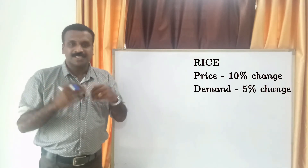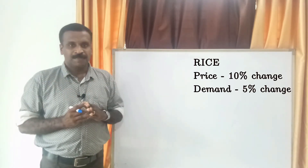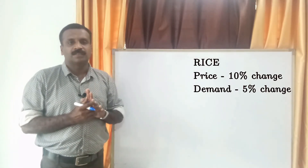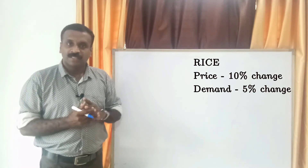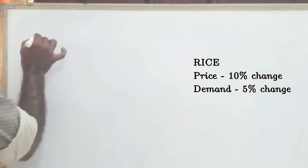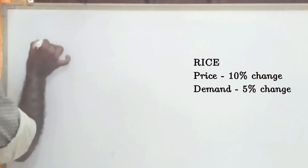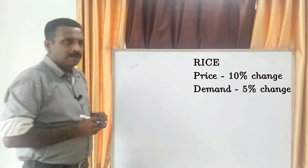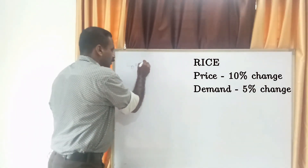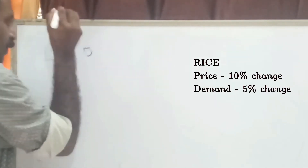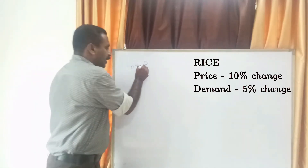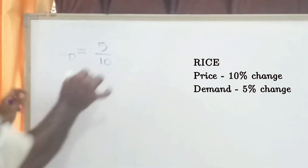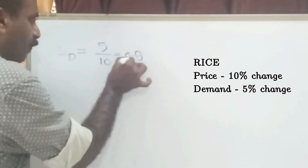Rice is a necessary good. To calculate, we look at the percentage change in demand divided by the percentage change in price. Ed equals percentage change in demand — which is 5 — divided by percentage change in price — which is 10. So 5 divided by 10 equals 0.5.